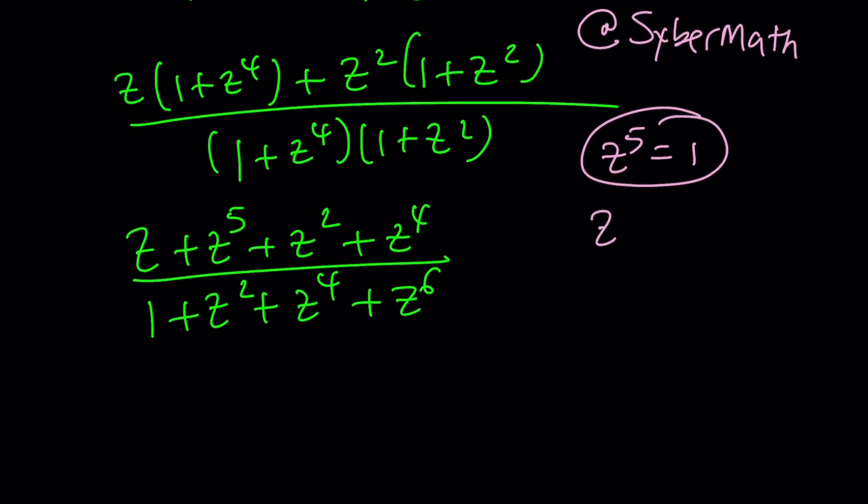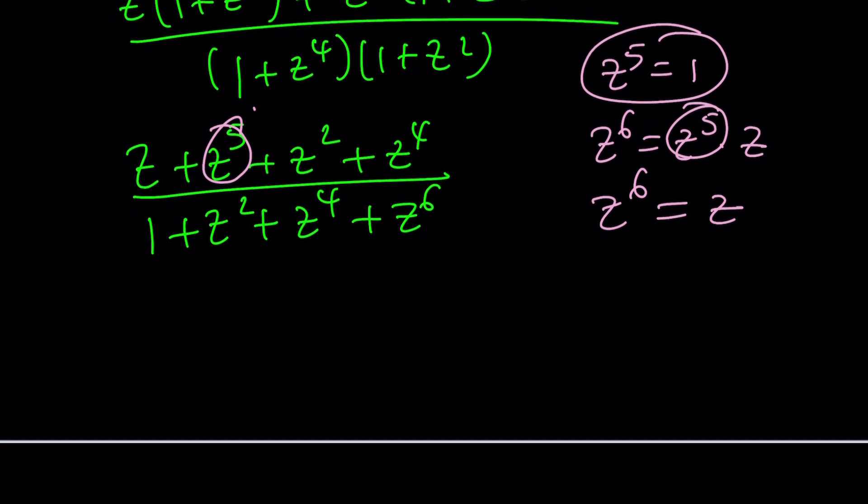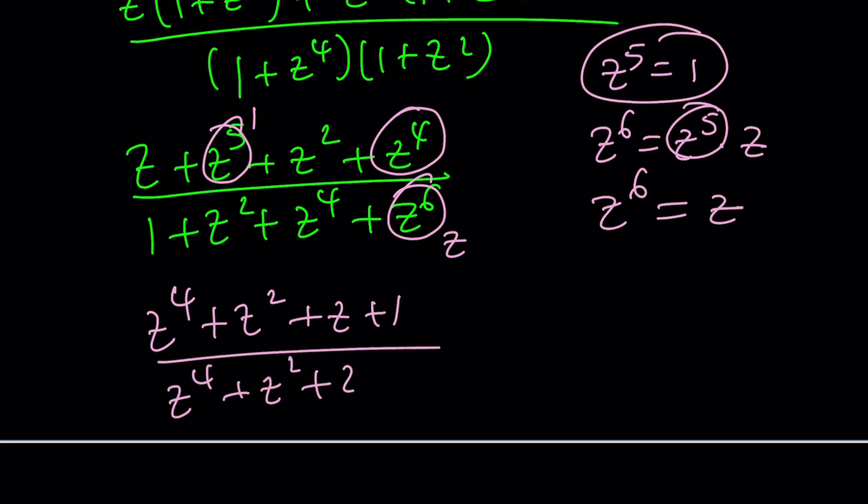So now, let me show you something really cool. z to the fifth is 1, and z to the sixth can be written as z to the fifth times z. Since z to the fifth is 1, z to the sixth is the same as z. Talk about cyclic groups. So I can change this with 1 and this becomes z. We get z to the fourth plus z squared plus z plus 1 divided by z to the fourth plus z squared plus z plus 1. Houston, we have a solution, and the answer is 1.